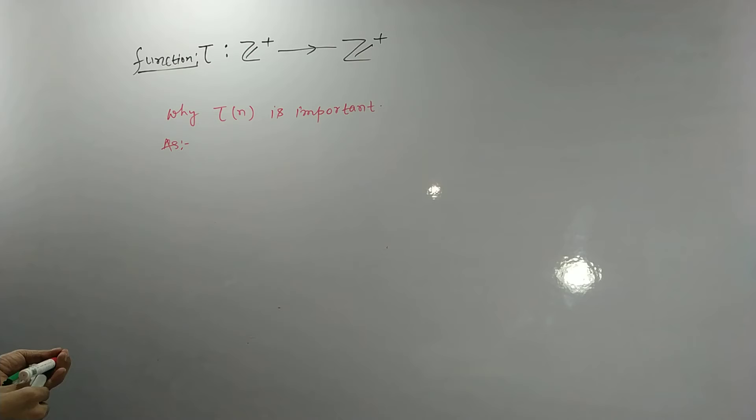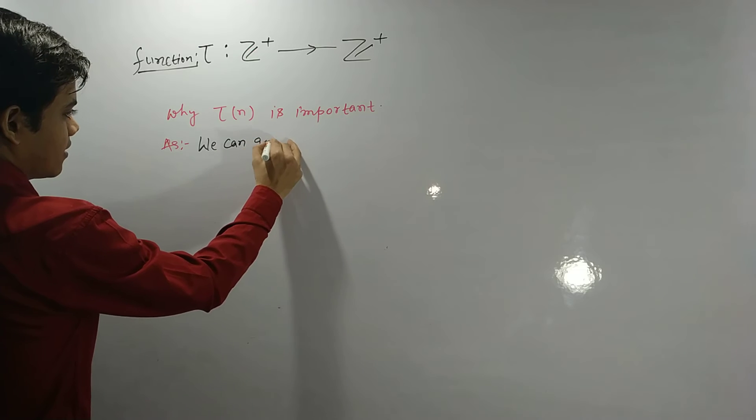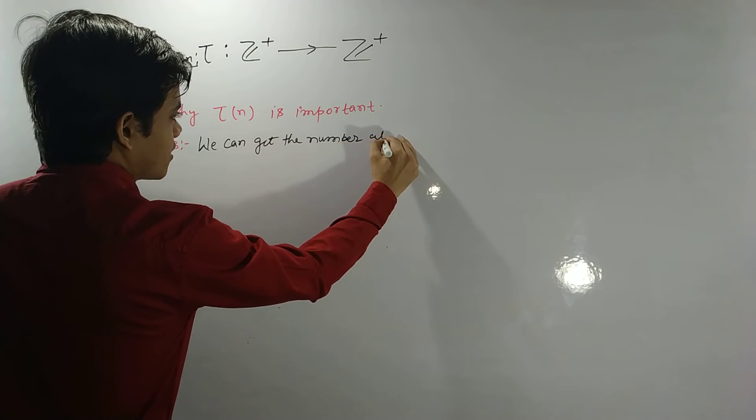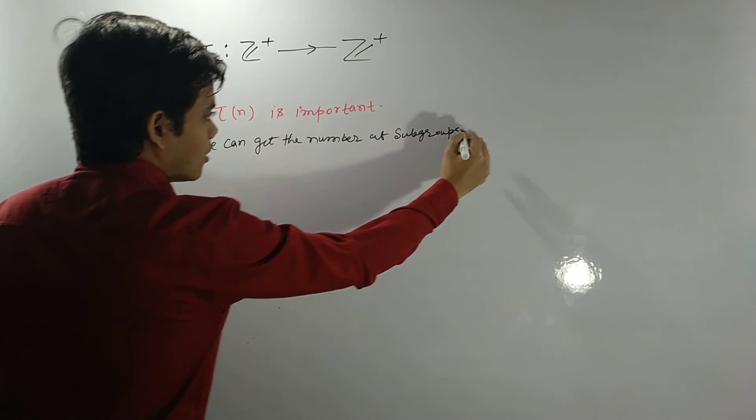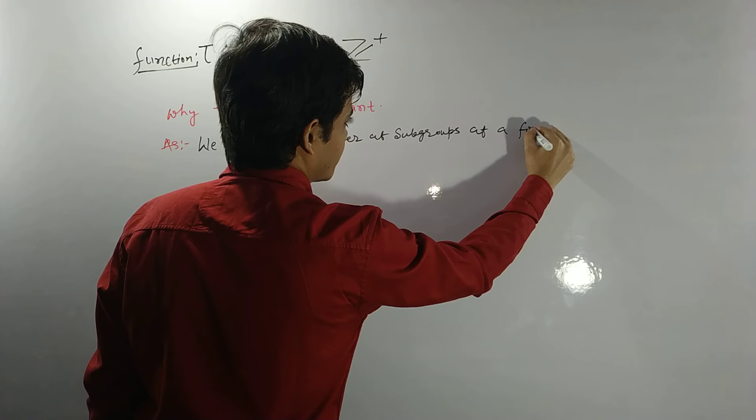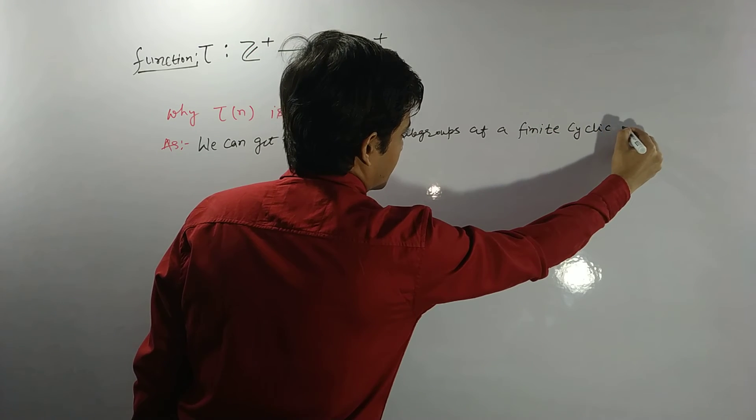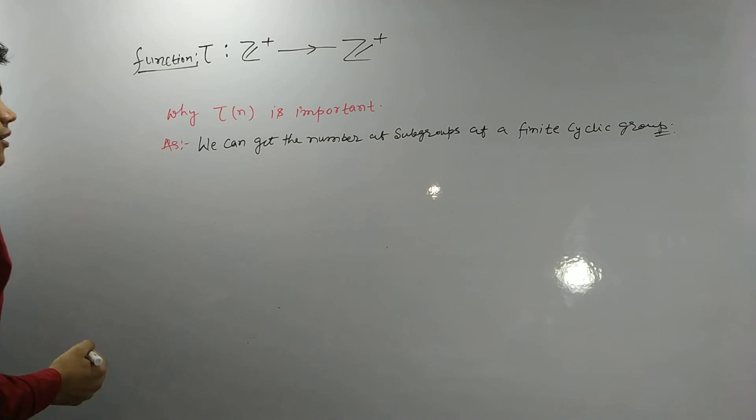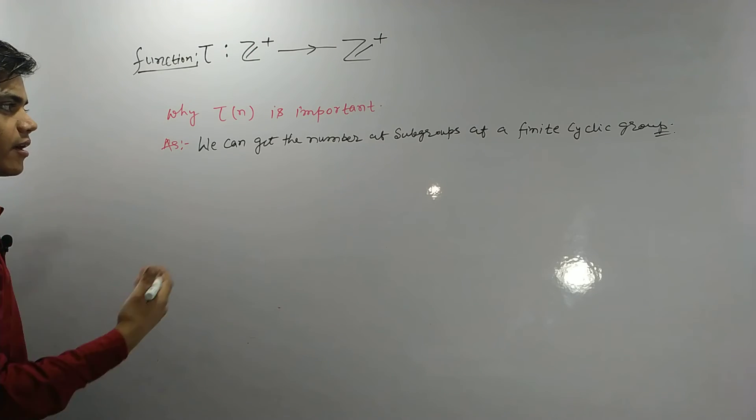Because we can get the number of subgroups. We can get the number of subgroups of a finite cyclic group. Okay, for example, if I will ask you...